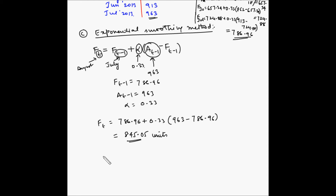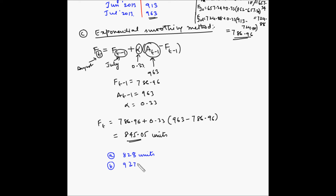Comparing the three forecasts: using the simple moving average we get 828 units for August; using the weighted moving average the forecast is 927.8 units; and using the exponential smoothing method the forecast is 845.05 units.